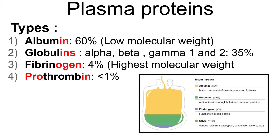The prefix pro means before, and thrombus means clot. The suffix -in means protein, so prothrombin is the protein needed to form blood clots.